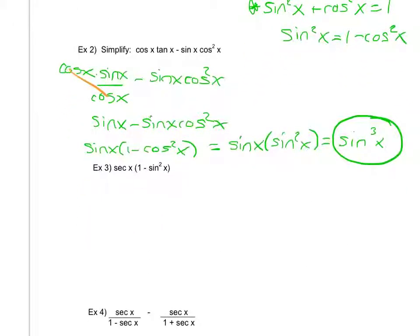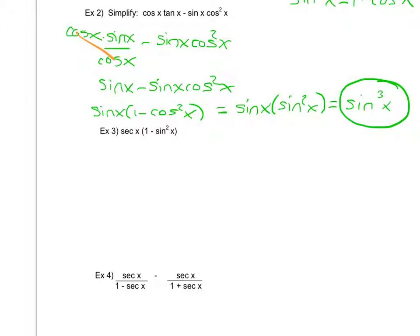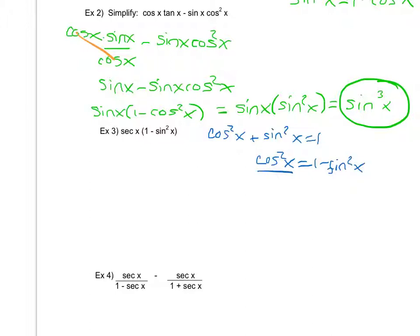Moving on to example three — there are four examples total. In example three, I see secant of x times the quantity one minus sine squared x. I have two possible routes: change to sine and cosine, or distribute. But what I notice most is I may be able to replace this binomial with a single monomial. Using the identity cosine squared x plus sine squared x equals one, rearranging gives me one minus sine squared x equals cosine squared x.